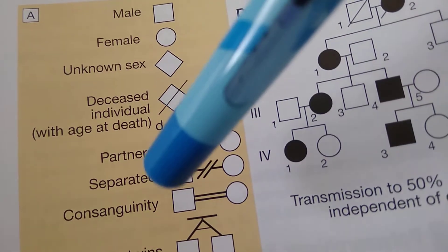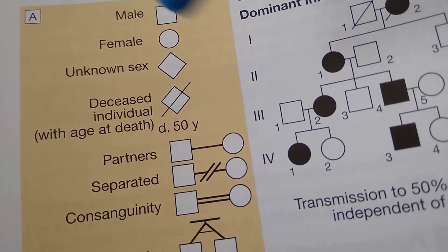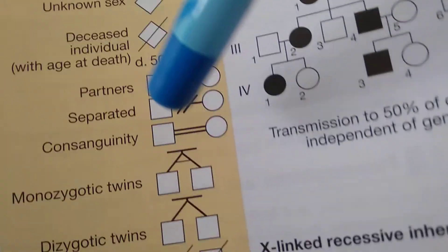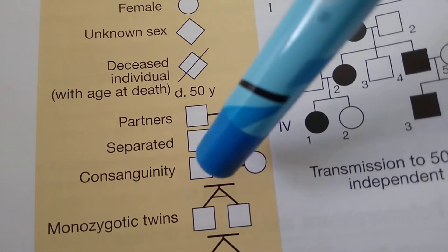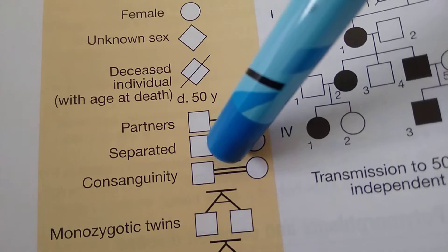Consanguinity can be, you know, mother's brother, father's sister, cousins, brother-sisters, first degree consanguinity, right.